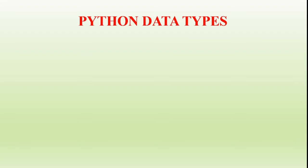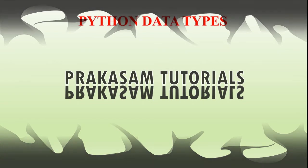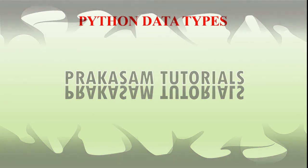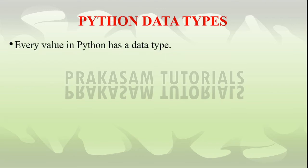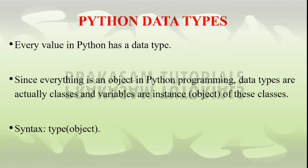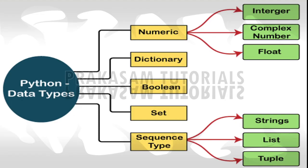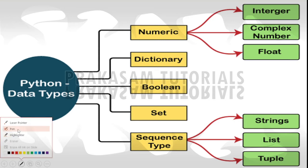Every value in Python has a data type. Since everything is an object in Python programming, data types are actually classes and variables are instances or objects of these classes. The standard data types are: numeric data type, dictionary data type, boolean data type, set data type, and sequence data type.